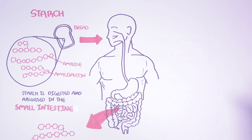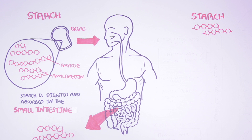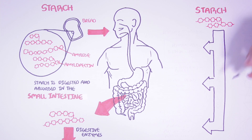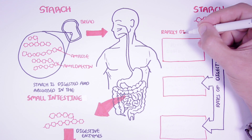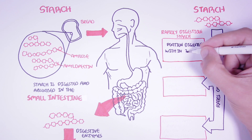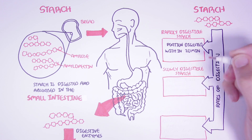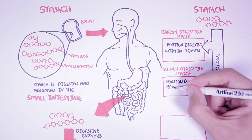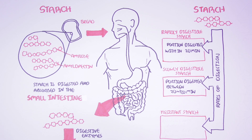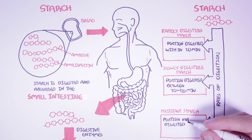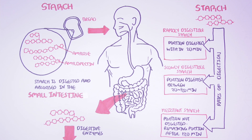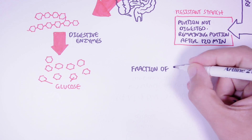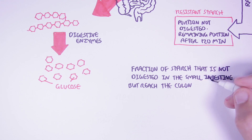Starch can be divided into three types depending on the rate it is digested. Starch can be rapidly digested — the portion digested within 20 minutes of ingestion. Starch can be slowly digested — the portion digested between 20 and 120 minutes. And finally, a portion of starch can be resistant to digestion altogether — the remaining portion after 120 minutes. A better definition of resistant starch is: the fraction of starch that is not digested in the small intestine but reaches the colon.